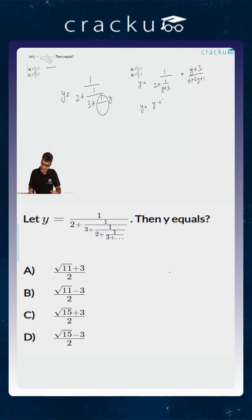Or y is equal to y plus 3 divided by 2y plus 7, or 2y square plus 7y is equal to y plus 3, or the value of 2y square plus 6y minus 3 is equal to 0.